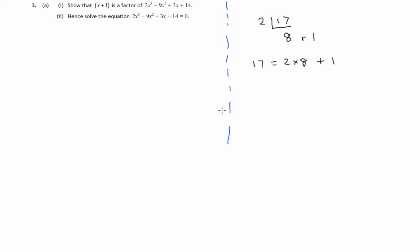So there's a similar division going on with this linear factor and this cubic polynomial. Instead of writing x plus 1 down, we write negative 1. If it was x minus 1, we'd write plus 1. If it was x plus 2, we'd write minus 2. If it was x minus 2, we'd write positive 2. So that's what we're dividing by.